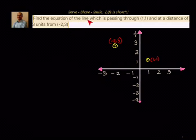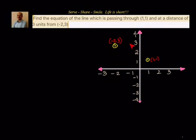Find the equation of the line which is passing through (1,1) and at a distance of 3 units from (-2,3). So we have a coordinate axis. We have point (1,1) and another point (-2,3). Now we need the straight line which is passing through (1,1) at a distance of 3 units from (-2,3). One straight line we know is basically a line parallel to the y-axis, passing through (1,1) at a distance of 3 units.